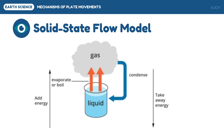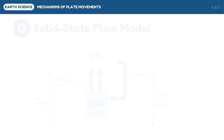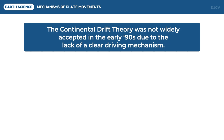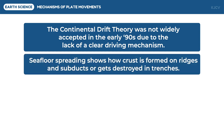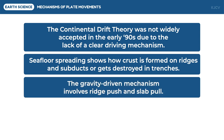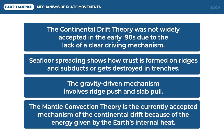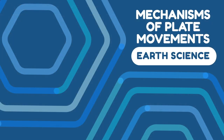To summarize, the continental drift theory was not widely accepted in the early 1900s due to the lack of a clear driving mechanism. Seafloor spreading shows how crust is formed on ridges and subducted or destroyed in trenches. The gravity-driven mechanism involves ridge push and slab pull. The mantle convection theory is the currently accepted mechanism of plate movement, driven by the earth's internal heat. That ends our discussion on the mechanisms of plate movements.